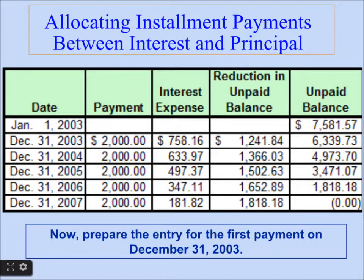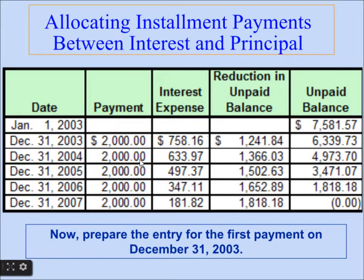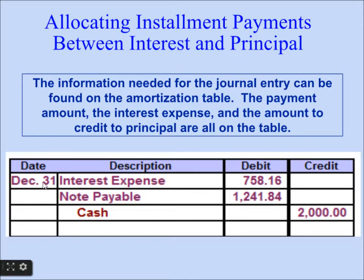Now let's prepare the journal entry for the first year. At the end of December 31, 2003, the journal entry will be: debit Interest Expense $758.16, debit Notes Payable $1,241.84, and credit Cash $2,000, since we are paying with cash.